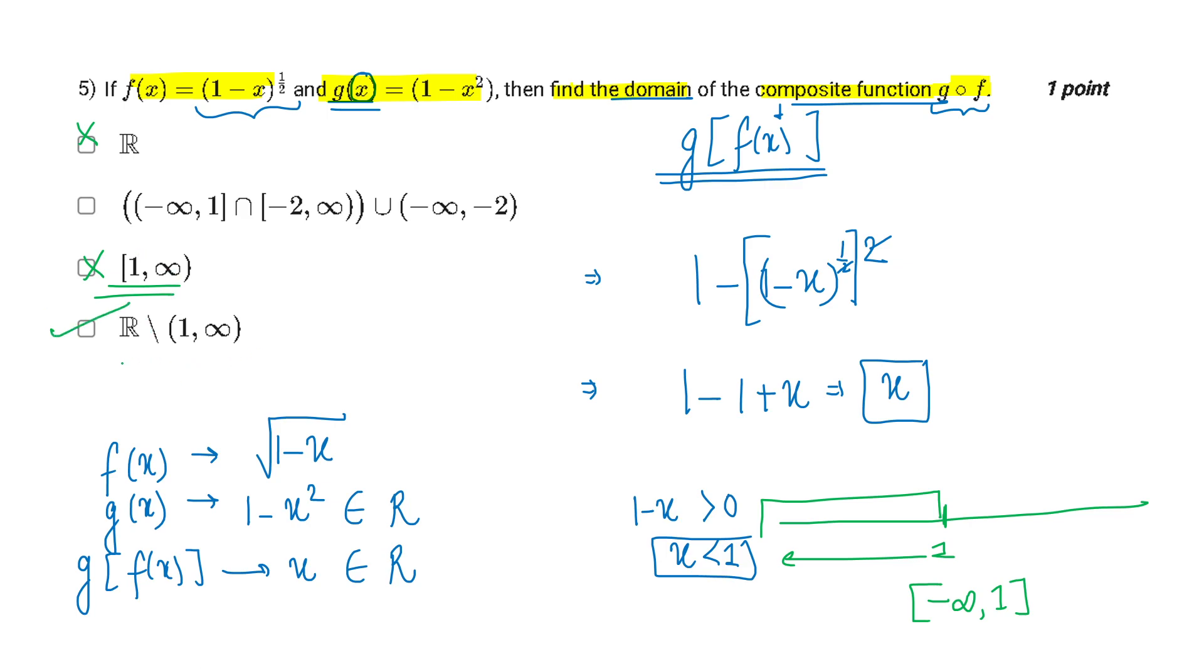Therefore, this gets true kiunki R mein se agar mein 1 comma infinity hata dete hoon, what I will get minus infinity to 1, which is my domain.